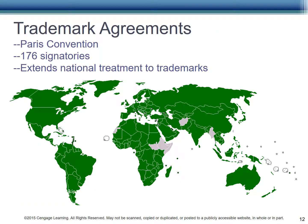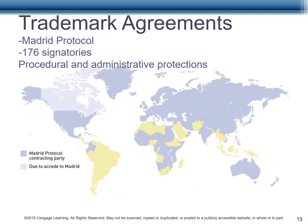The Paris Convention has 176 signatories and extends national treatment to trademarks — again, national treatment, not necessarily good treatment. The Madrid Protocol also has 176 signatories and provides procedural and administrative protections to countries who are signatories to the agreement.